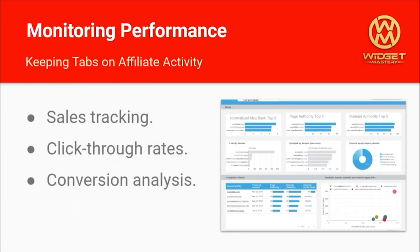Once your affiliates are on board, it's crucial to keep tabs on their performance. We'll dive into tracking methods such as monitoring sales, click-through rates, and conversion analysis to measure affiliate effectiveness. Data-driven decisions are the secret sauce in optimizing your affiliate program for maximum impact.